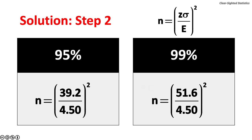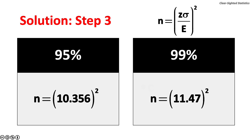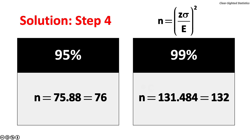Step two, multiply z by the presumed population standard deviation, $20. Step three, divide z times the presumed population standard deviation by the allowable error. Step four, square z times sigma over the allowable error.